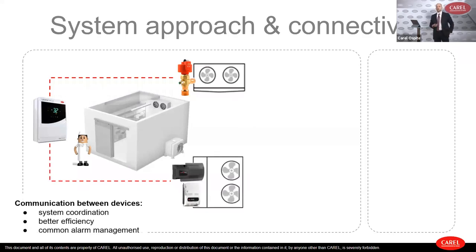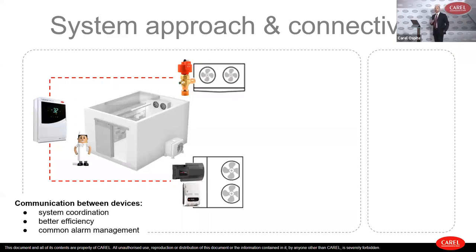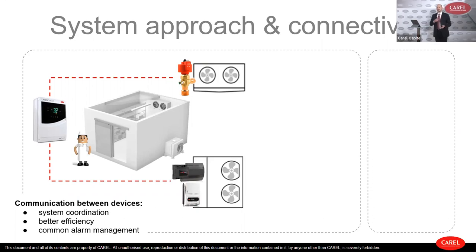Can we do more? If we connect a smart condensing unit — for example, a variable speed condensing unit — it can speak together with the control panel and the electronic expansion valve. This is a coordinated system because information is exchanged by all three parts. We can have better efficiency and common alarm management. If something happens on one device, the other devices can take an alternative path to manage the emergency.